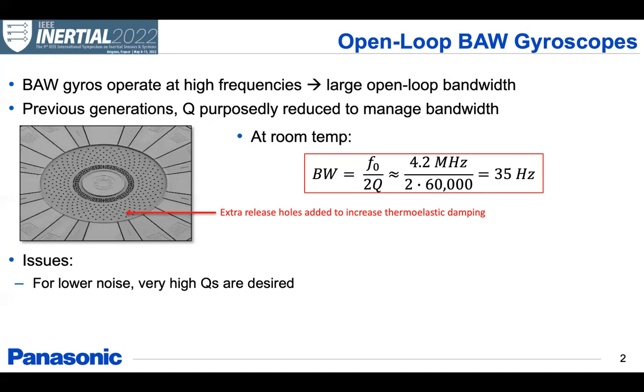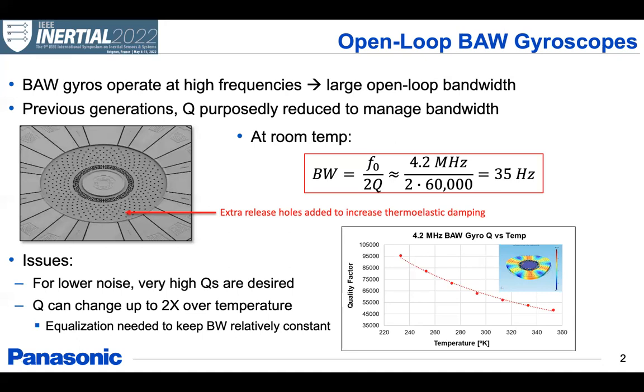Also, in devices that are implemented in single crystal silicon, Q can change up to 100% over the whole temperature range. So if you want a relatively stable bandwidth across temperature, complicated equalization back-end circuits are needed to keep this bandwidth constant.